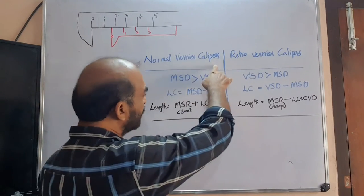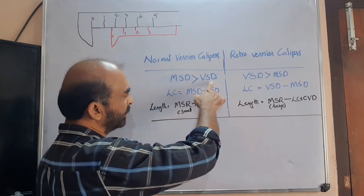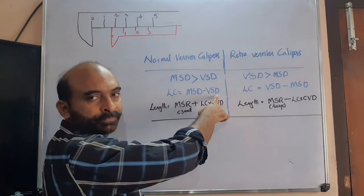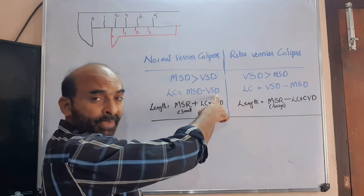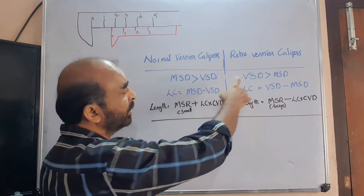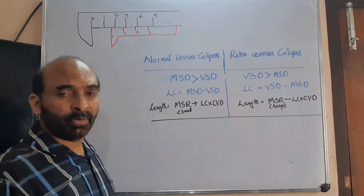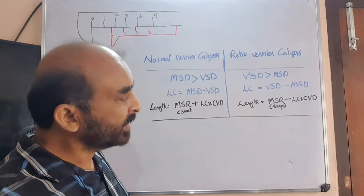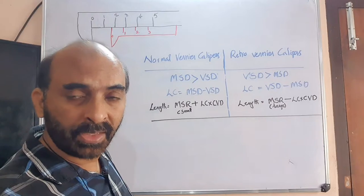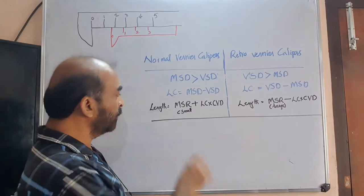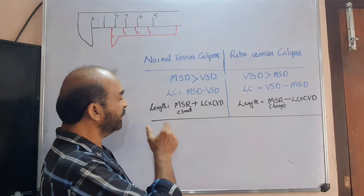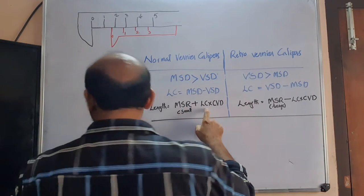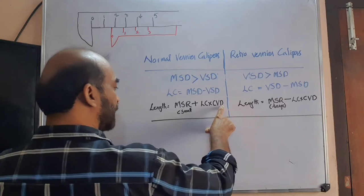For normal vernier caliper, MSD is greater than VSD, so least count must be MSD minus VSD — to make it positive. For the retro vernier caliper, VSD is greater than MSD, so least count must be VSD minus MSD — again, to retain it positive. And to find the length, the equation is: length equals main scale reading plus least count multiplied by the coinciding vernier division.